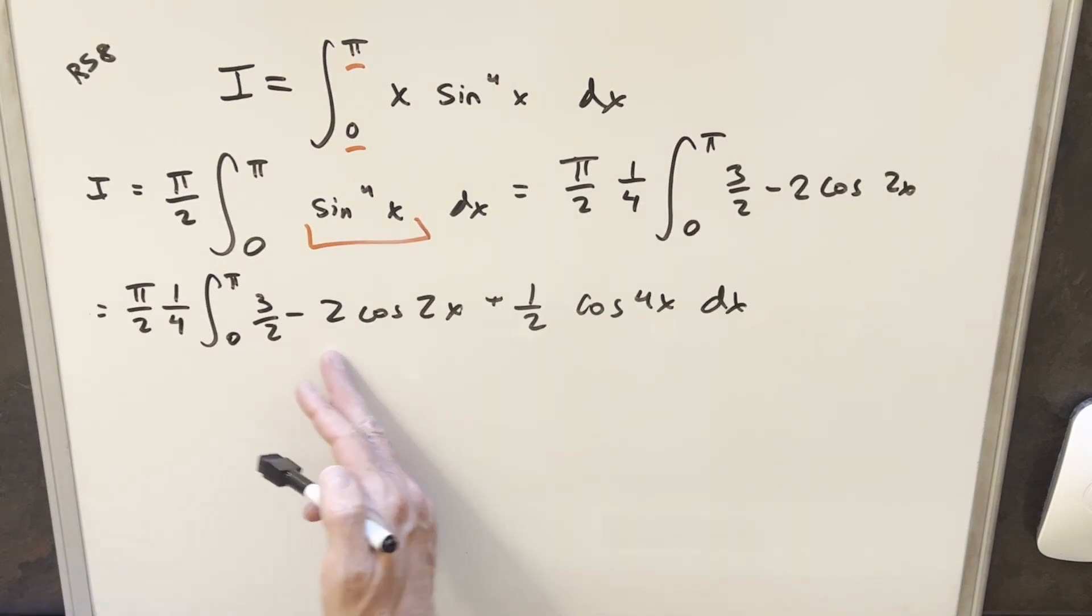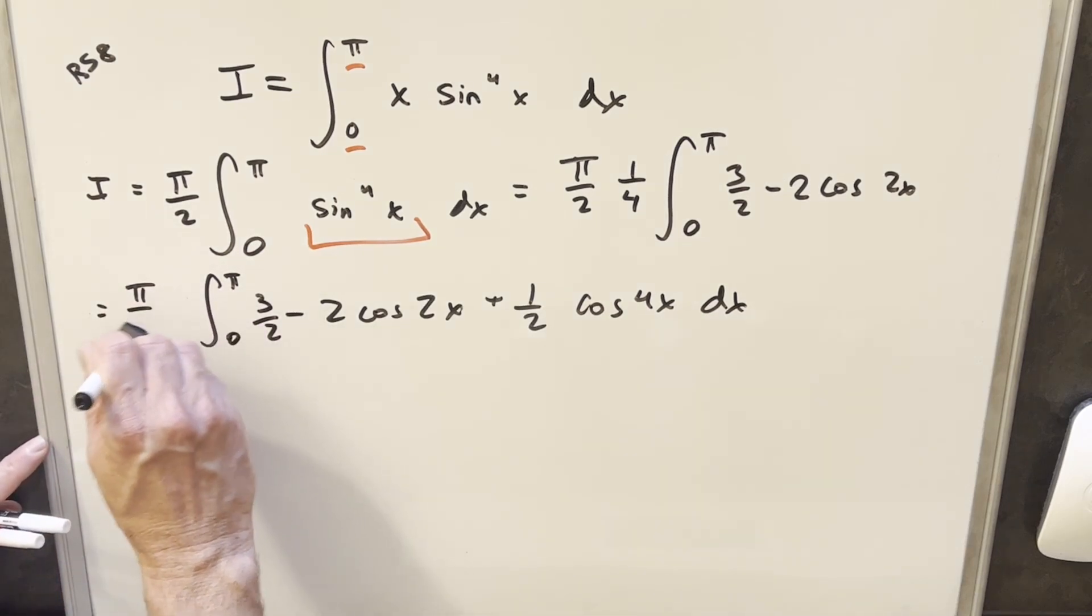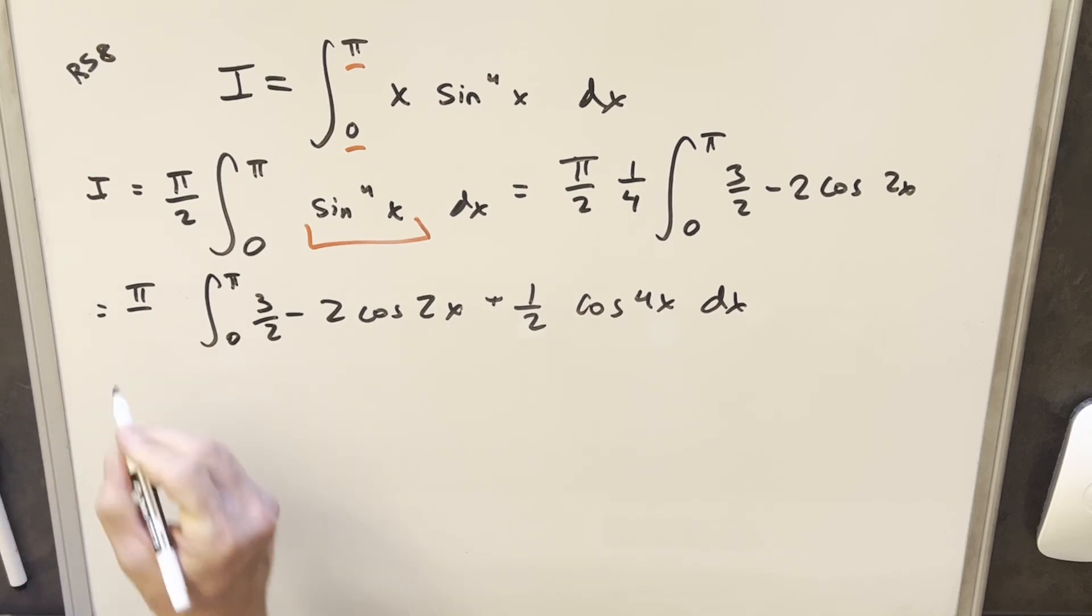So from our previous board, I just plugged this back in. And I just brought this one fourth out front of the integral. And I'm actually going to multiply this pi over 2 and write this as pi over 8 now. And I think we're ready to integrate this.